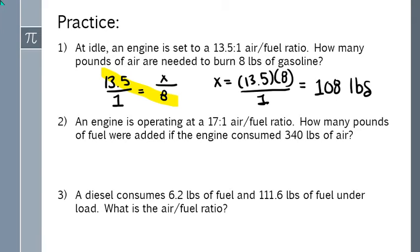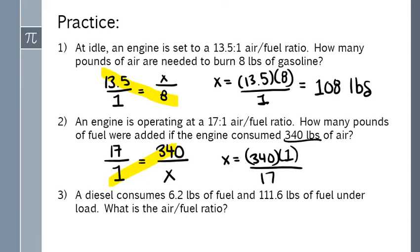Next question. Our air-fuel ratio is given, it's 17 to 1. How many pounds of fuel were added if the engine consumed 340 pounds of air? Well this time we know the air and we don't know the fuel. So when I do my magic banana, the two numbers that are kitty corner are these two. That's fine. So X is going to be equal to 340 times one divided by the leftover. And we're going to get 20 pounds.